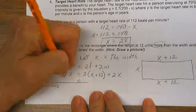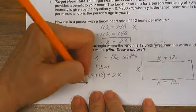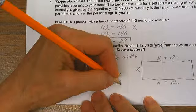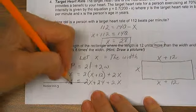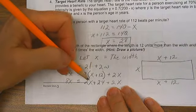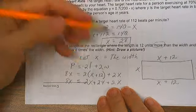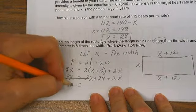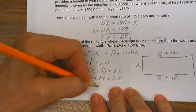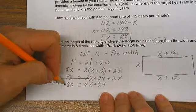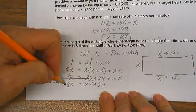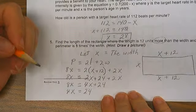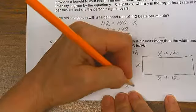That gives us 8x is equal to 2 times x is 2x, 2 times 12 is 24 plus 2x. I combine like terms. That's going to give me 8x equals 4x plus 24. I can now subtract 4x from each side, 4x equals 24. Therefore, x equals 6.